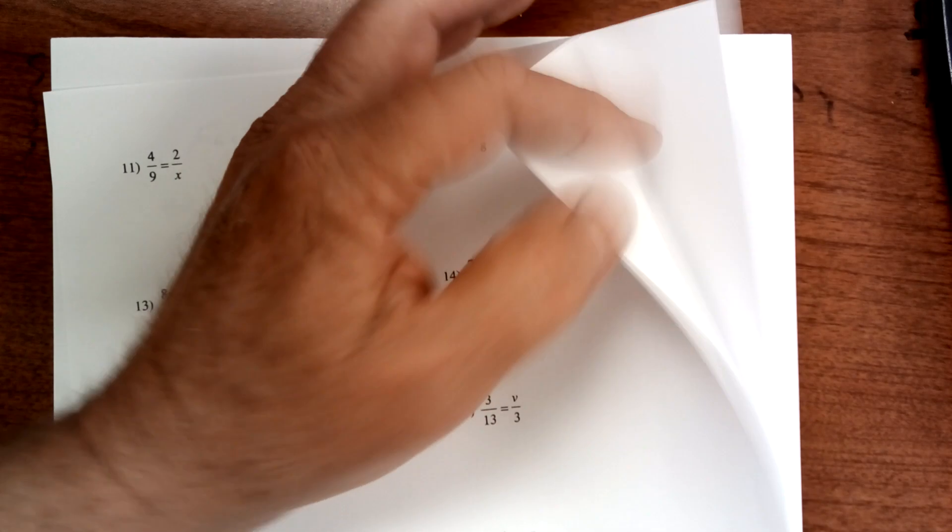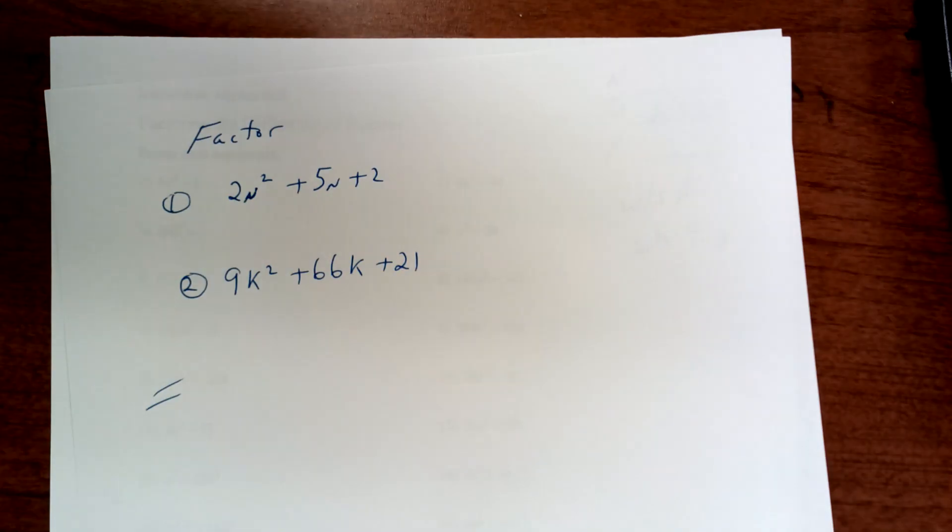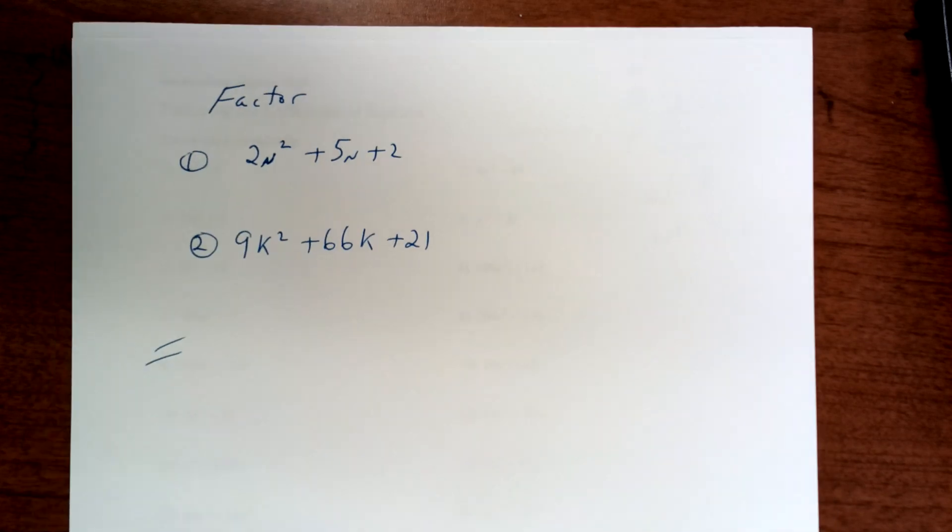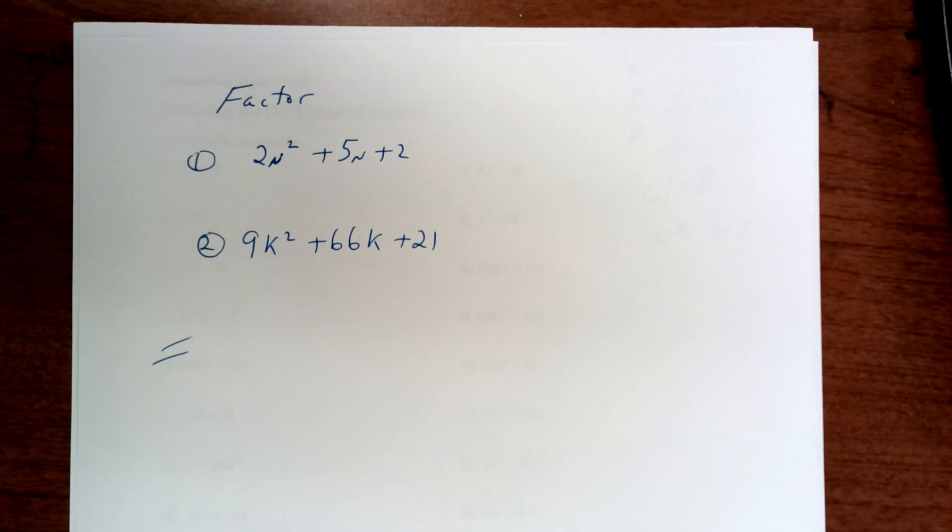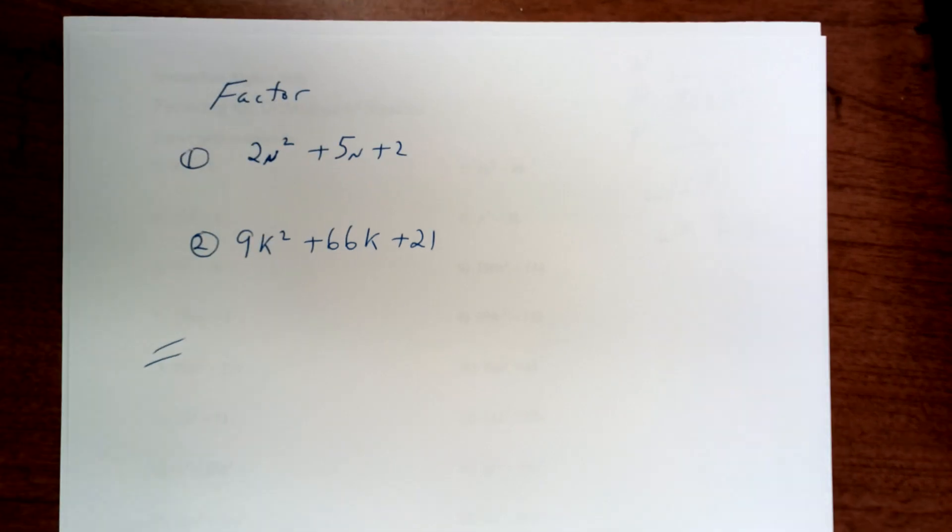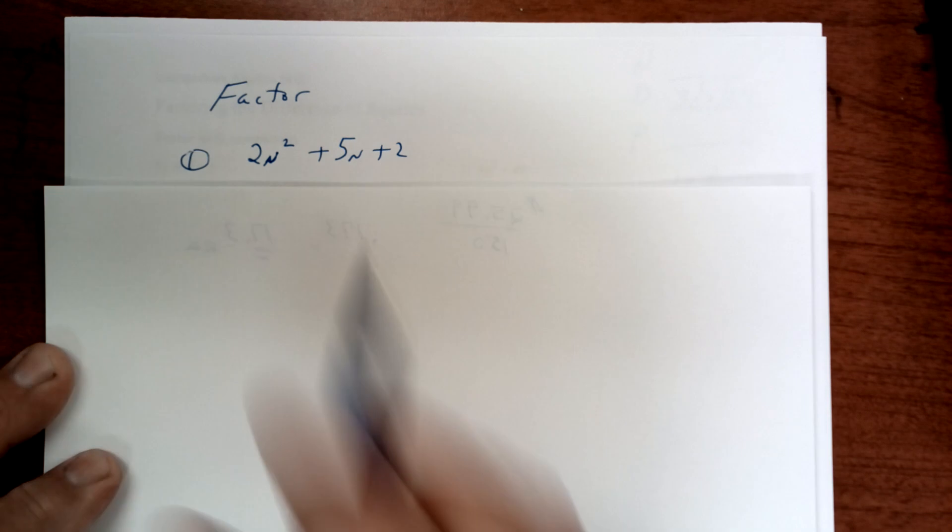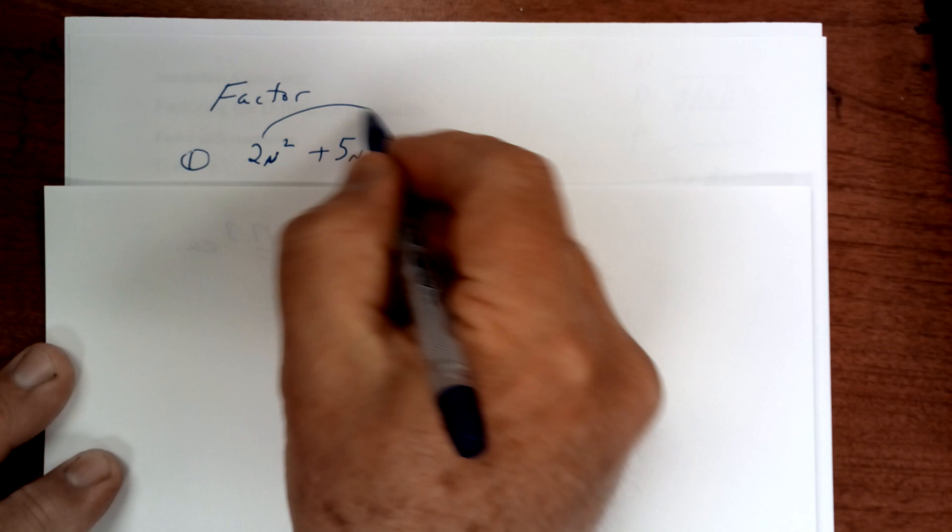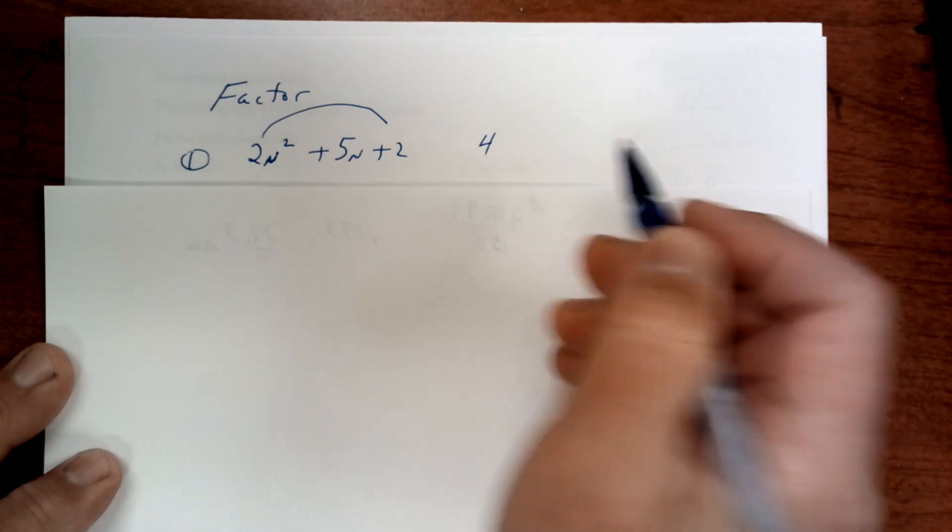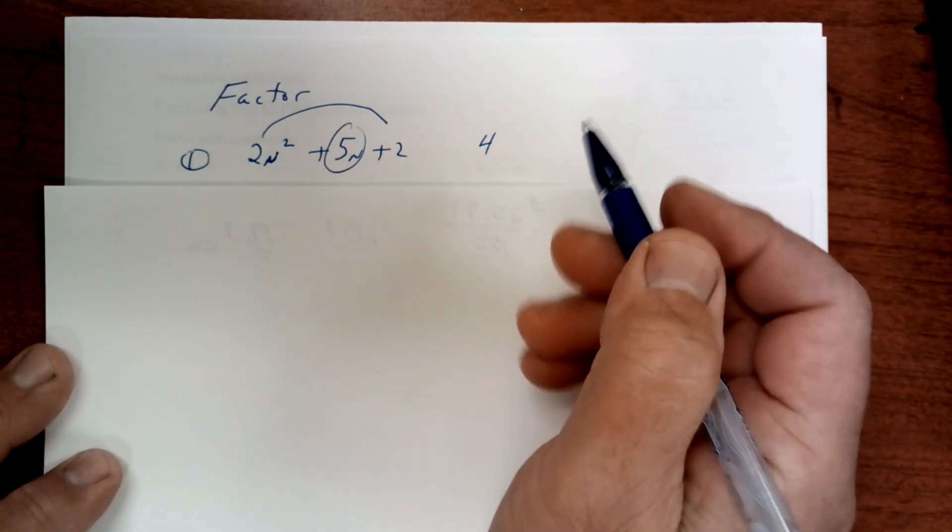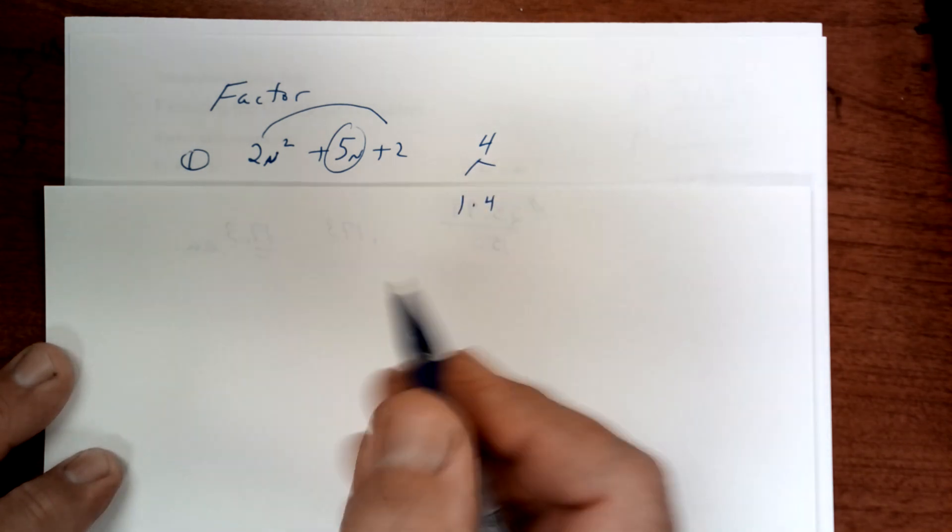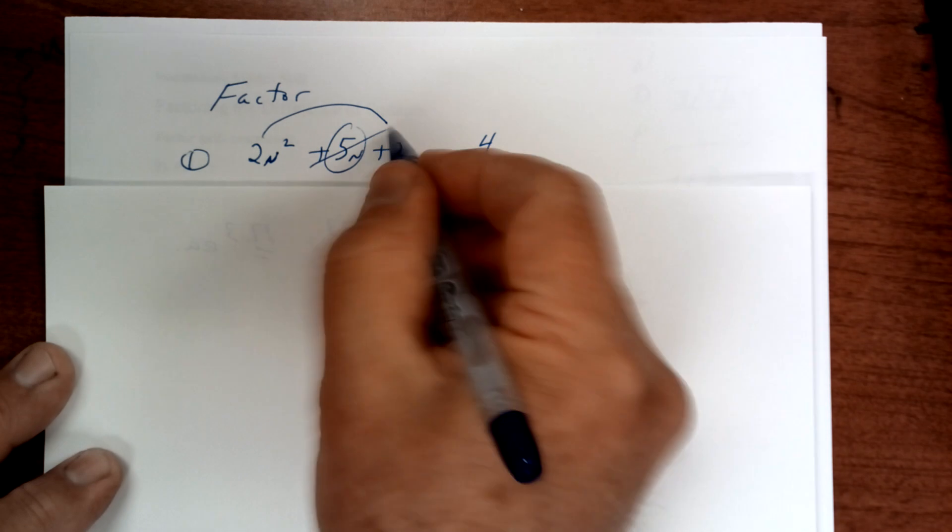All right, let's move on to college algebra. You need to factor these. To factor this first one, you always try to factor something out, but you can't. So you're going to multiply 2 times 2 and get 4, and you're looking for a combination that gives you 5. It's 1 times 4 that adds to give you 5.